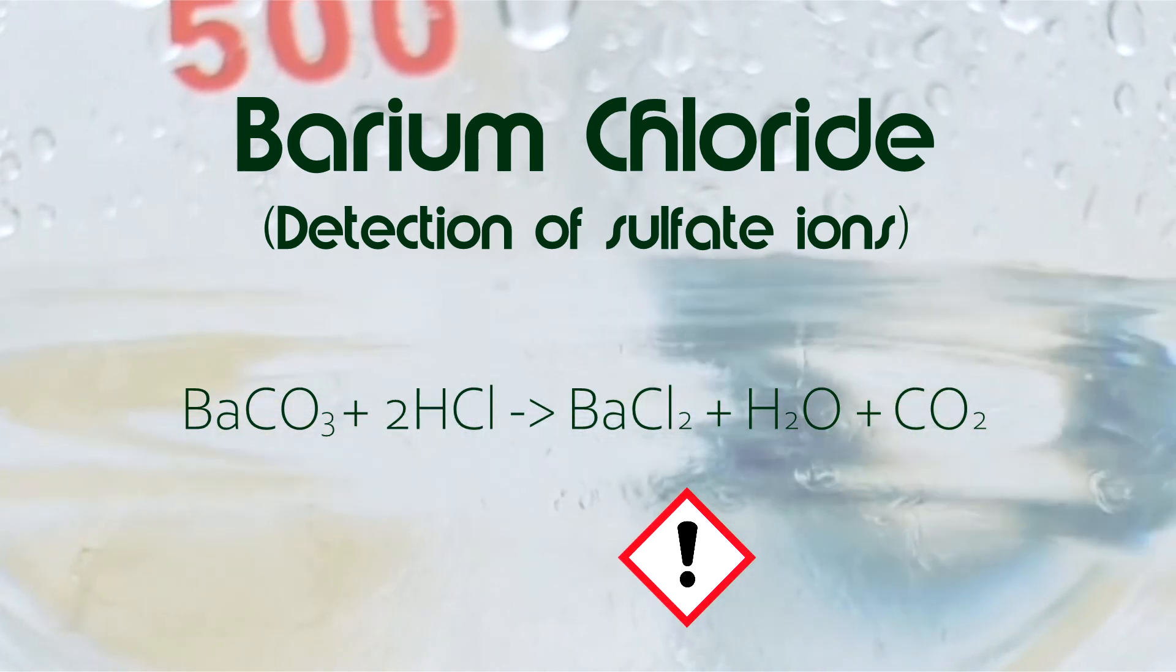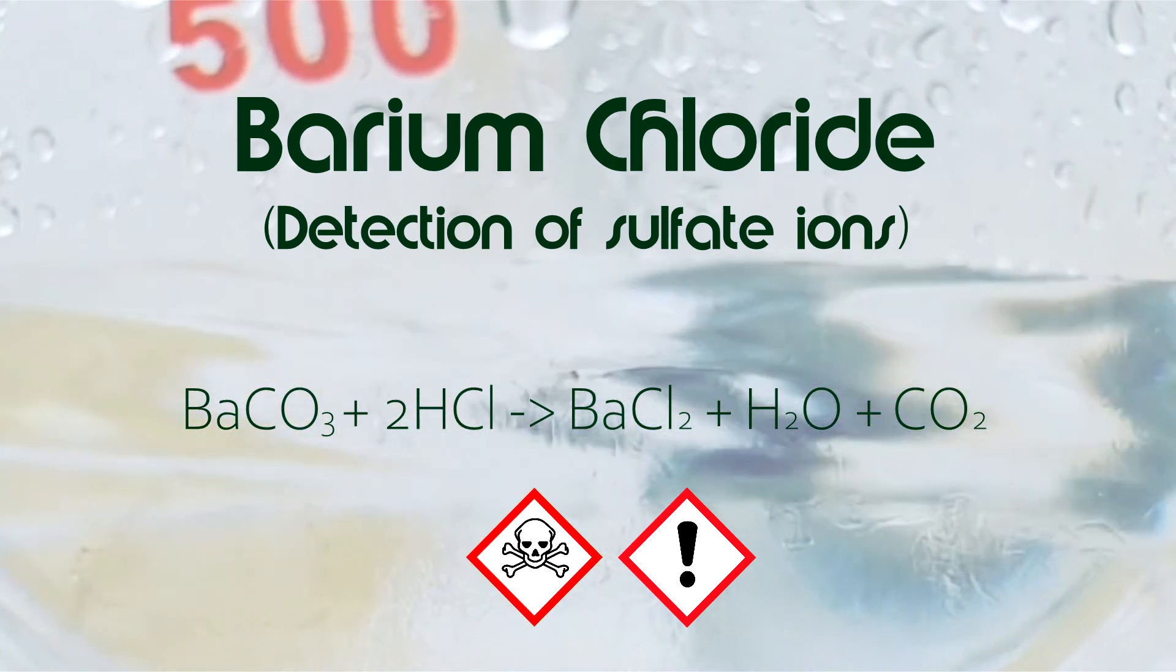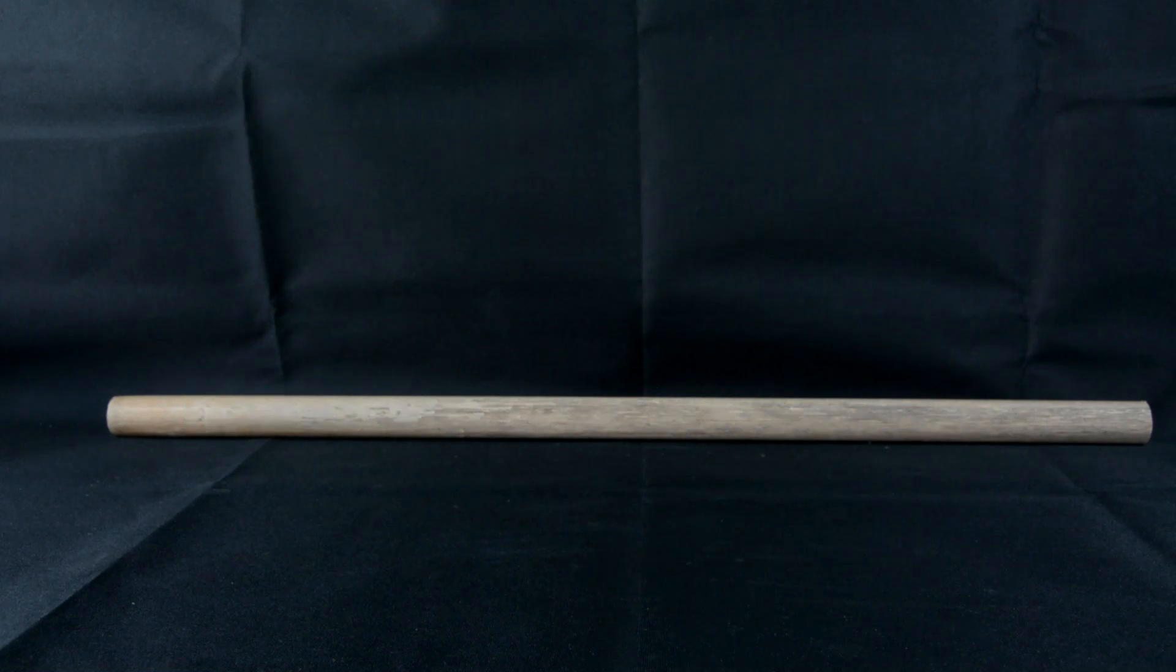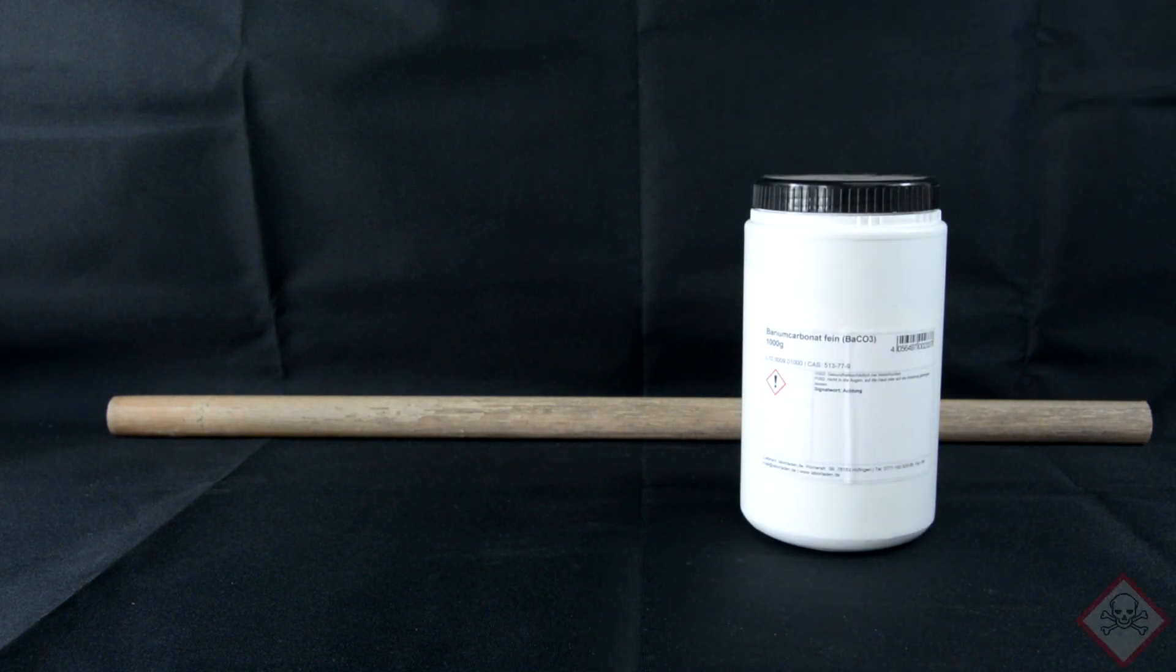Barium carbonate was used as a rodenticide in the past, so take proper precautions. Barium chloride is very poisonous—one to four grams can kill an adult. Let's start with our barium chloride preparation. First, I take my barium carbonate. This one I bought on Amazon, but there are several other sellers in the EU as well.